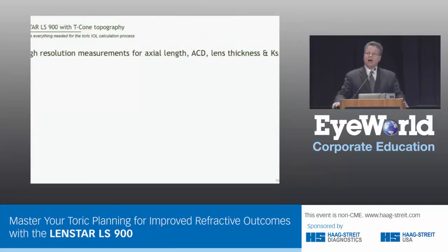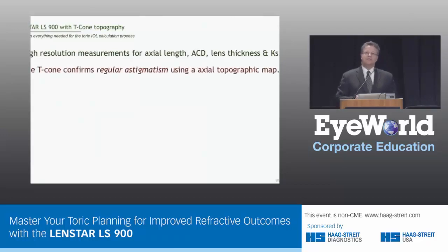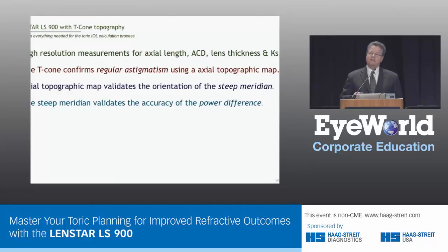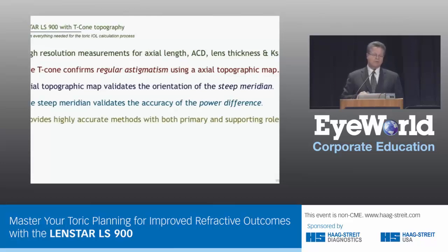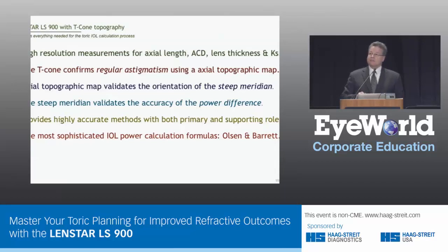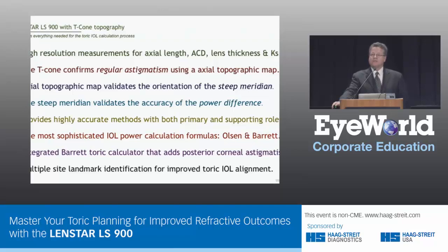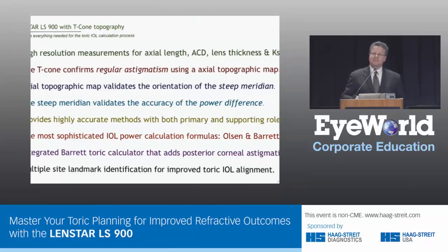In summary: high-resolution measurements of central corneal thickness, anterior chamber depth, lens thickness, and axial length. We now have the T-cone, which is a topographic device for a biometer — a first. The topographic map validates the orientation of the steep meridian and also tells us whether we have regular symmetrical astigmatism. The steep meridian validates the power difference between the two principal meridians of the cornea. This is a highly accurate method that allows us to perform the Toric IOL with a lot of predictability. It also has the most sophisticated formulas — Dr. Olson's and Dr. Barrett's — which we rely on exclusively in our practice. It has an integrated Barrett Toric calculator and multiple landmark site identification for Toric IOL placement. This truly is a Swiss Army knife — it's just an amazing instrument for biometry.